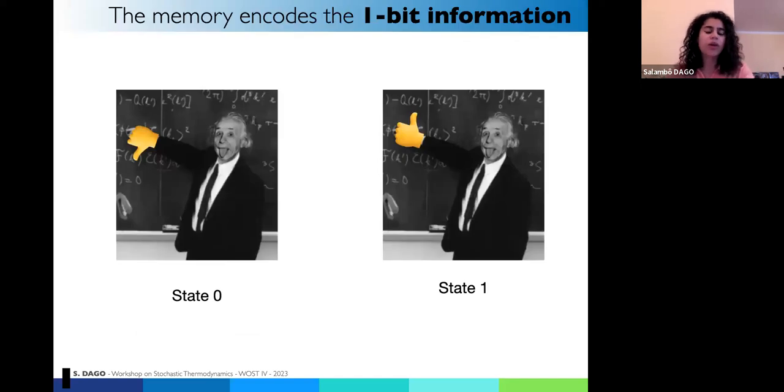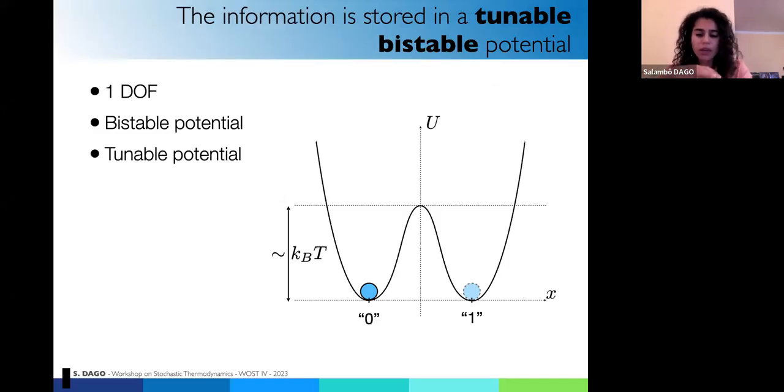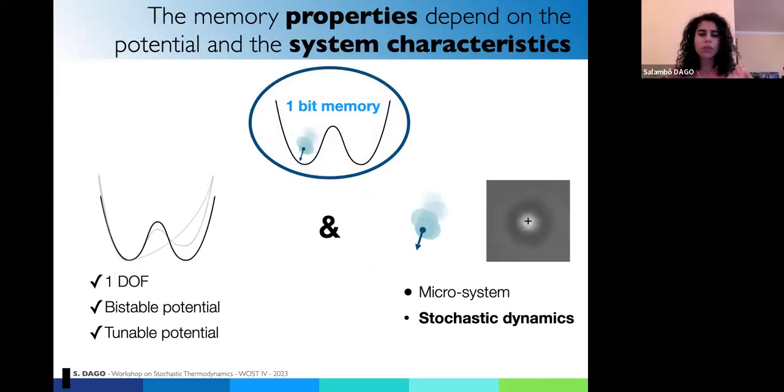Let's start on how we built the one bit memory. You need to encode one bit of information. So you need a state zero and a state one. The easiest way to do that is to encode it in one degree of freedom, let's call it x, in a bistable potential. So if the system is stable on the left here, it will be state zero and on the right, it will be state one. And the better is to have an energetic barrier high enough to prevent the bit from switching between the two possible states so that you're secure. And the potential has to be tunable in order to perform whatever operation you want to perform on the memory. What you have to keep in mind is that in the end, the performance of your memory will be ruled by two things. The first one will be the potential and the protocol you're using to operate on the memory. And the second one would be the system that is used to encode the memory.